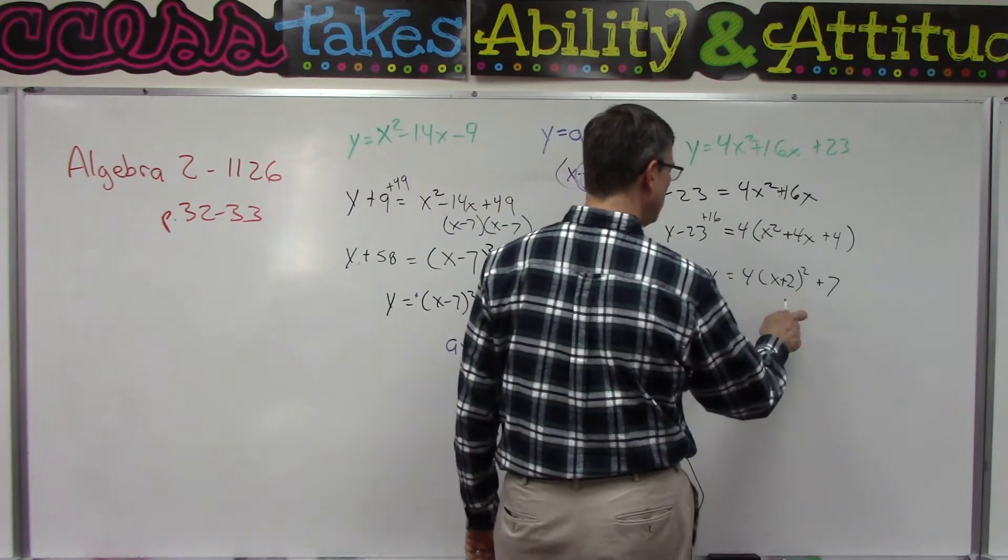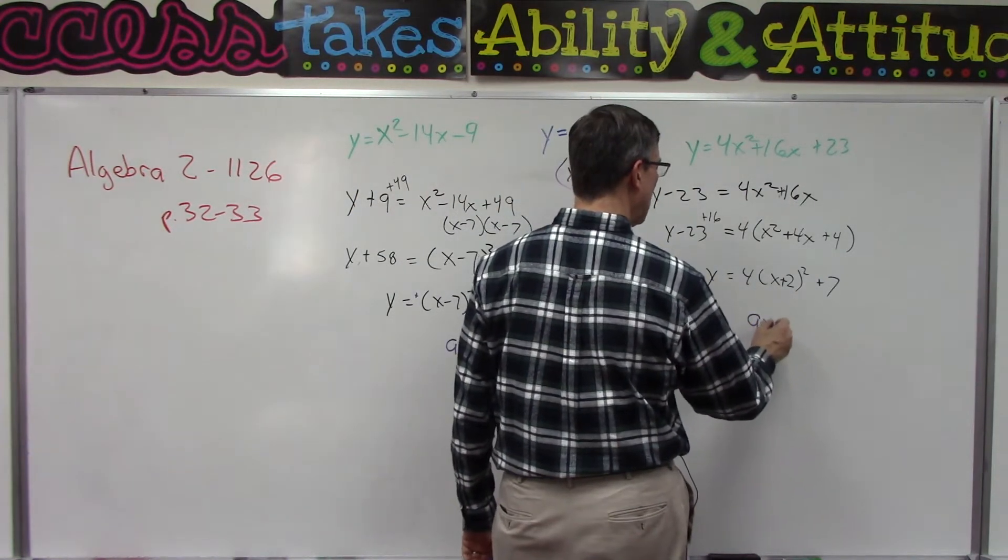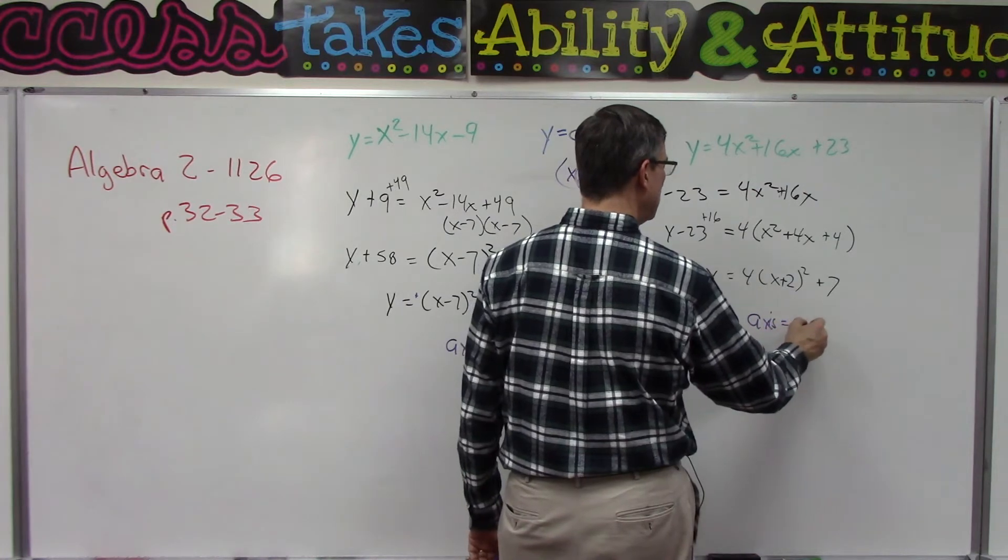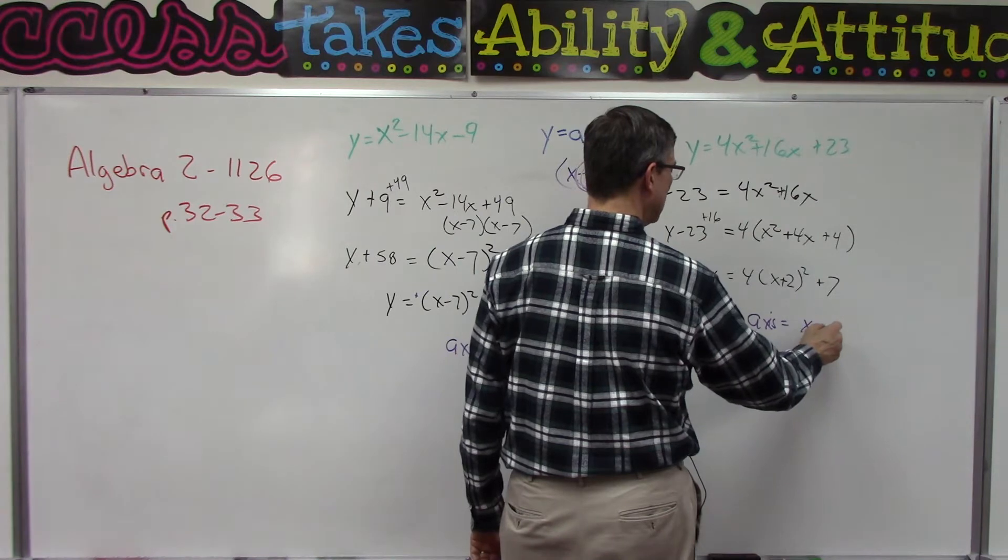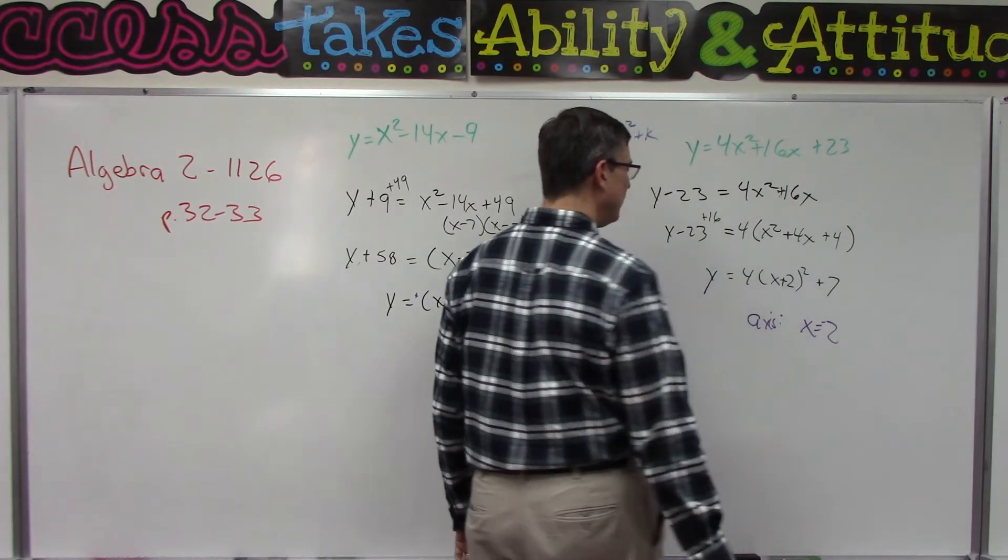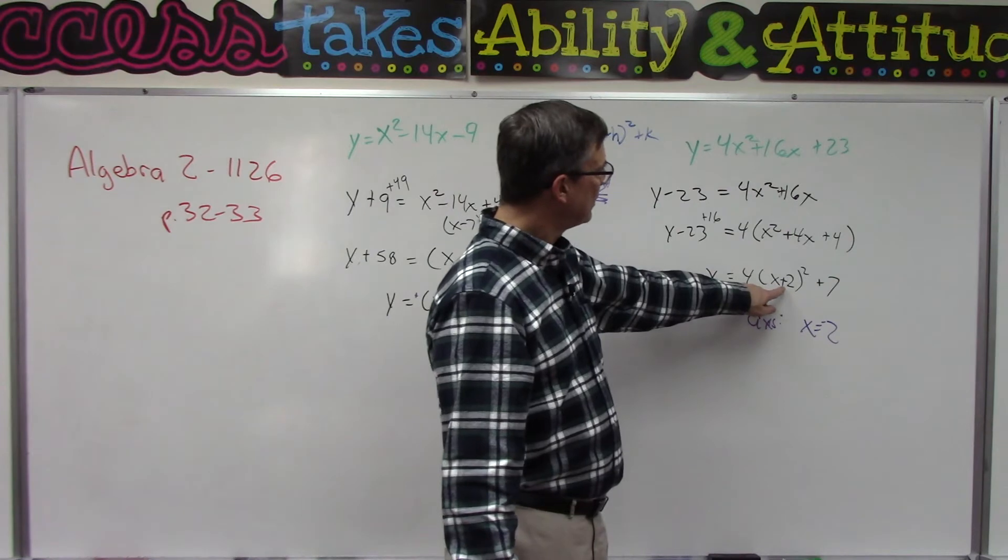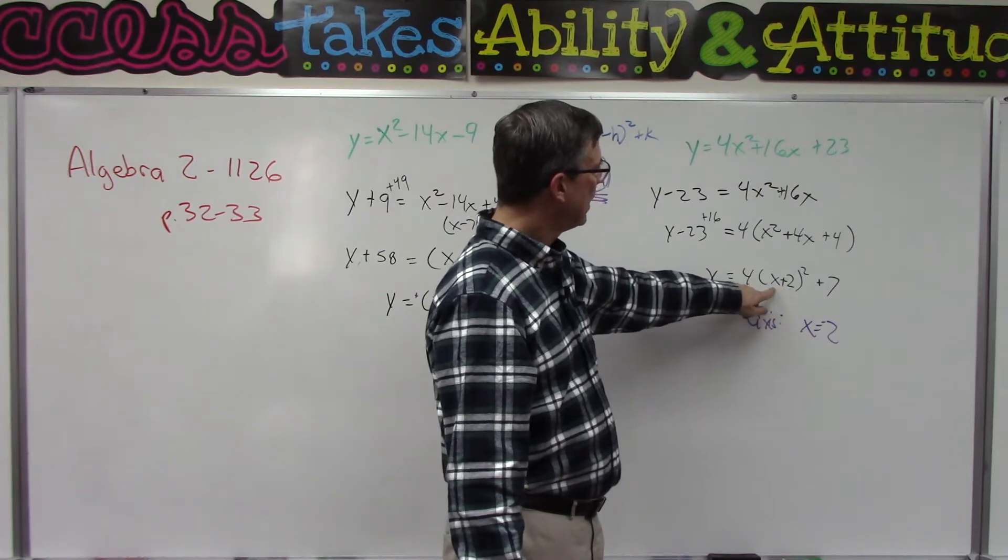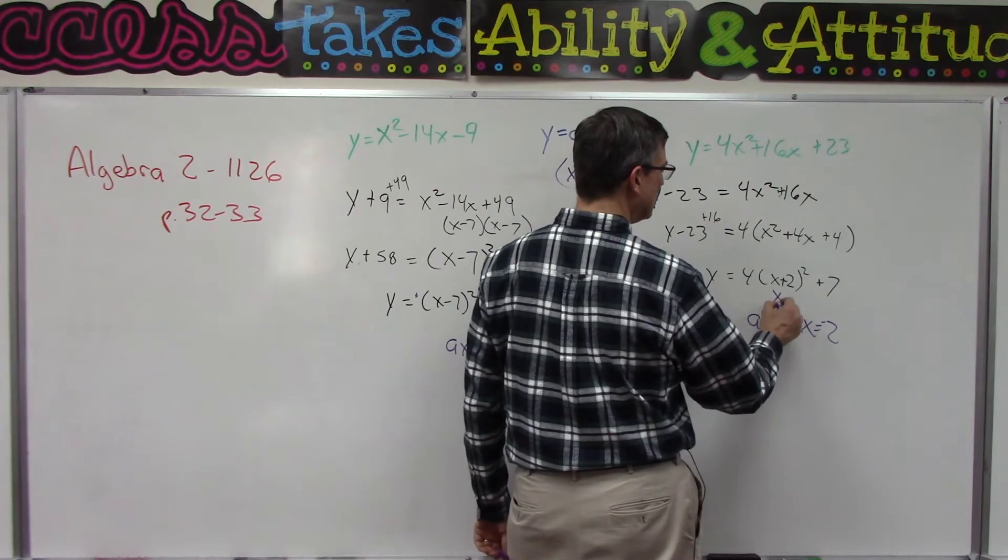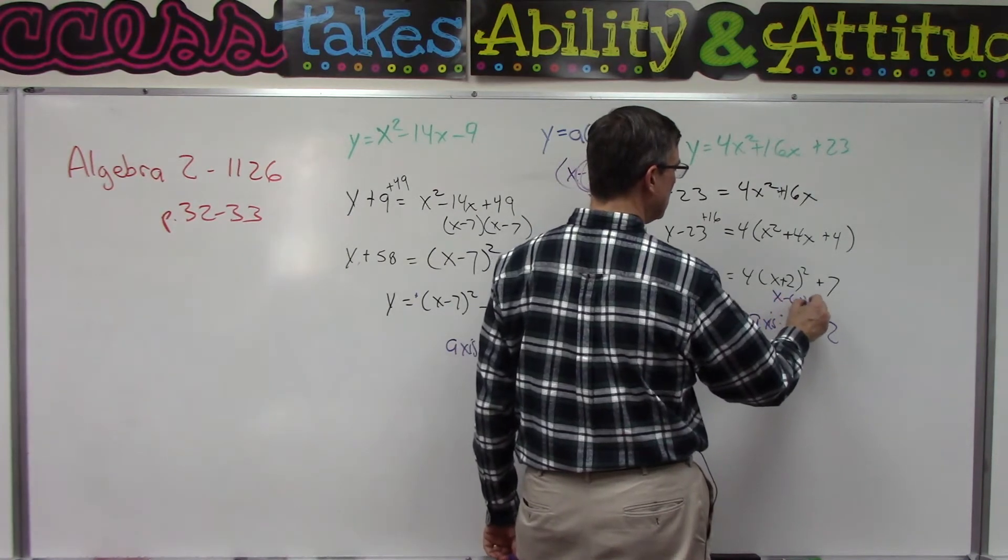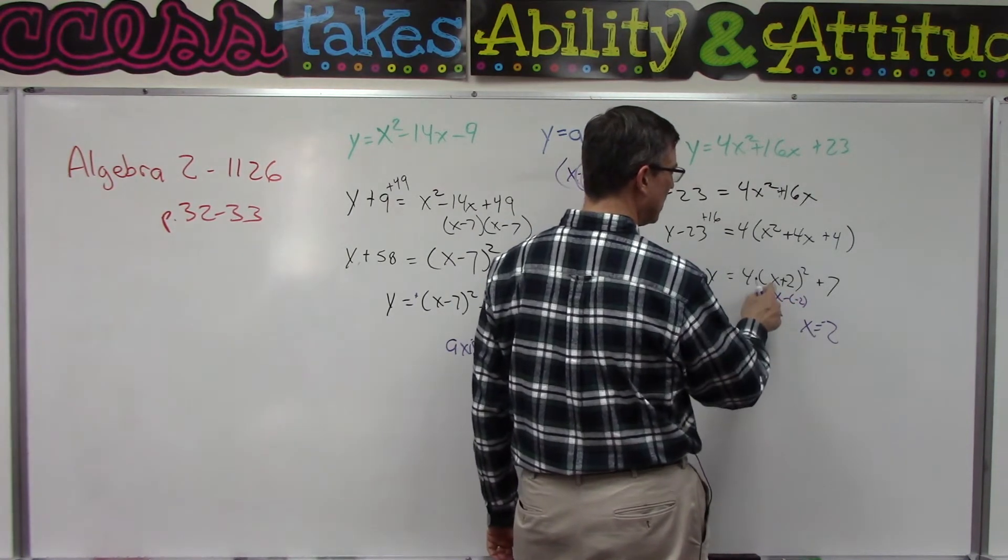Notice over here we have X plus 2. You might be tempted to say the axis of symmetry is 2, but that actually is not correct. It would be X equals negative 2. It's the opposite of the sign here. So you could think of this as rewriting this is X minus negative 2 in order to get X plus 2.